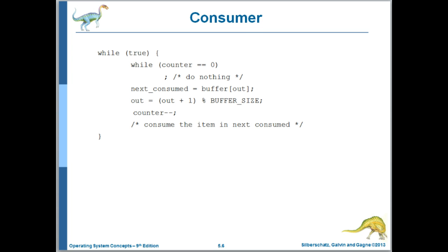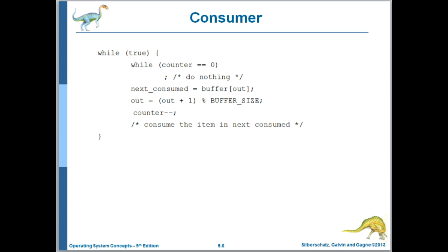The code for the consumer is similar. If counter is equal to zero, then there are no full buffers, so the consumer should spin. Otherwise, it can consume a buffer, increment its index to the next available buffer, and then decrease the number of filled buffers by decrementing counter there.